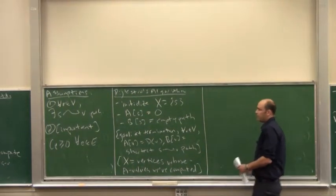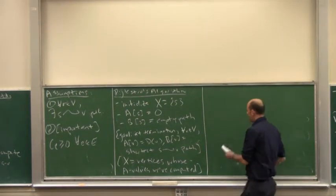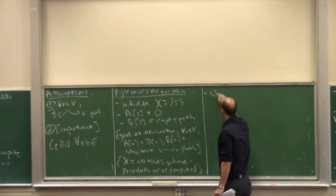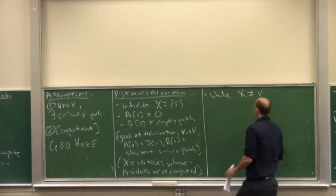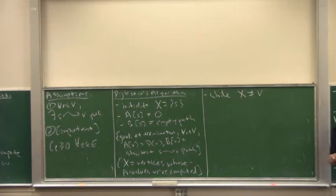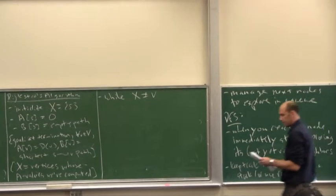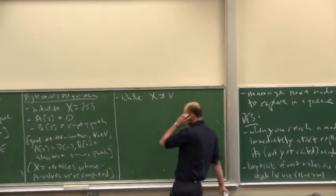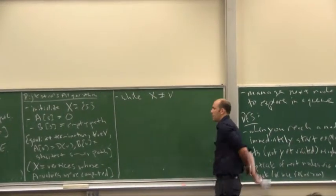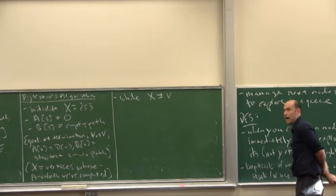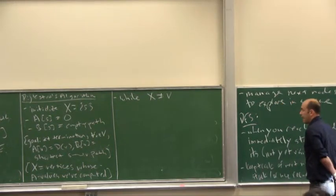So now we do essentially one loop, and that'll be it. So while there's stuff left, up until the mold has completely covered the entire graph. So what do we got to do? What we want to do is we want to grow the conquered territory capital X by one node. So we want to take a node not in X and add it to X.